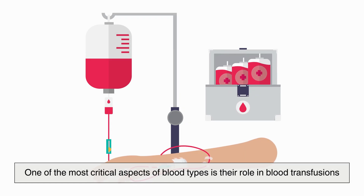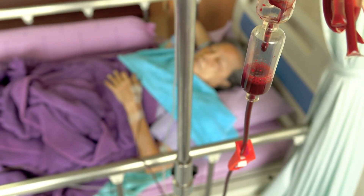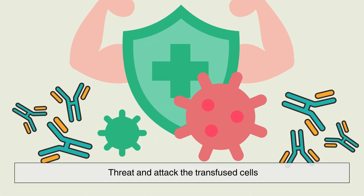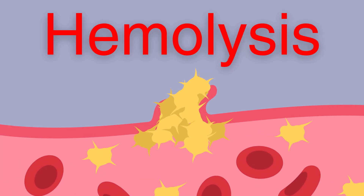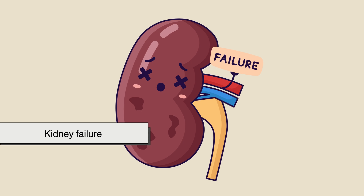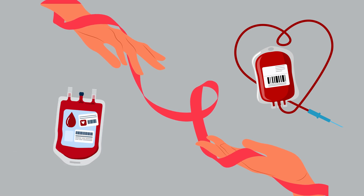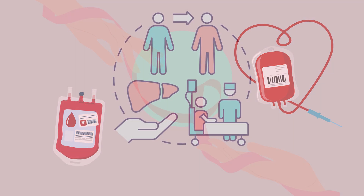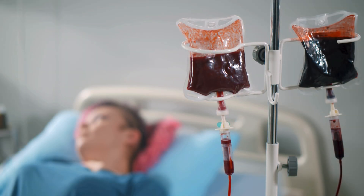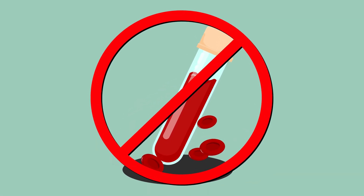One of the most critical aspects of blood types is their role in blood transfusions. If a person receives blood that does not match their type, their immune system will recognize the foreign antigens as a threat and attack the transfused cells. This can cause a dangerous reaction called hemolysis, where the red blood cells are destroyed, leading to severe complications including kidney failure, shock, and even death. That's why hospitals and blood banks carefully match donors and recipients. Blood type also plays a role in organ transplants, as an organ recipient's immune system may reject a transplant if the donor's blood type is incompatible.